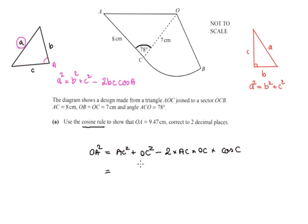We replace these with the values they have. AC squared is 8 squared plus OC squared, which is 7 squared minus 2 times 8 times 7 times the cosine of 78 degrees.